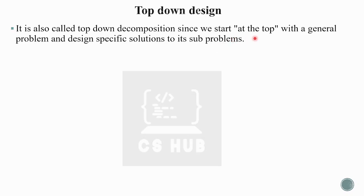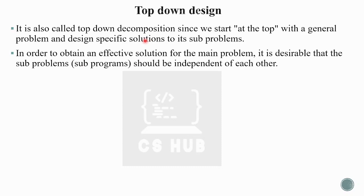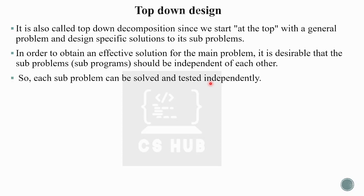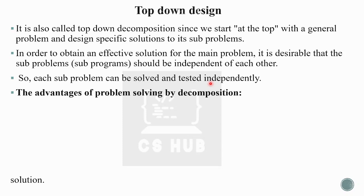Top-down design is called top-down decomposition because we start at the top with a general problem and design specific solutions to its sub-problems. If you start with a big problem, it is broken down into specific sub-problems. In order to obtain an effective solution for the main problem, it is desirable that the sub-problems should be independent of each other.